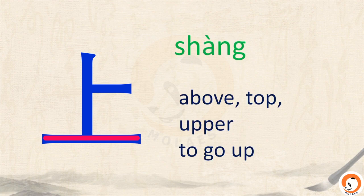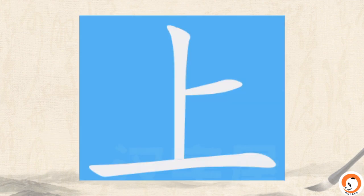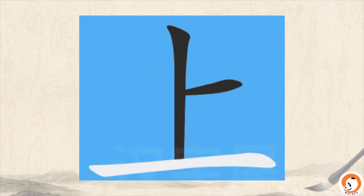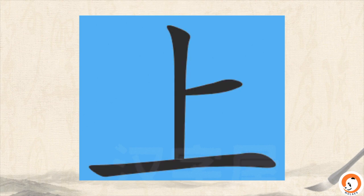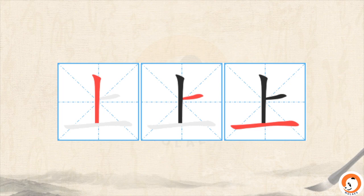Now let's get on with these characters. 上 means above, top, upper, and also means to go up or to go to. For example, 上海 literally means 'go to the sea.' Let's see how to write it: 一, 二, 三 — three strokes. Let's practice together: 一, 二, 三 — 上.